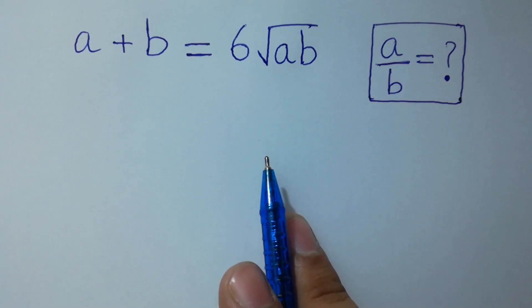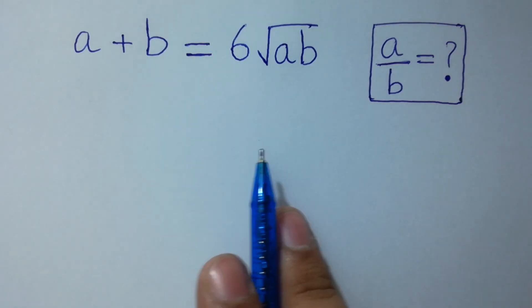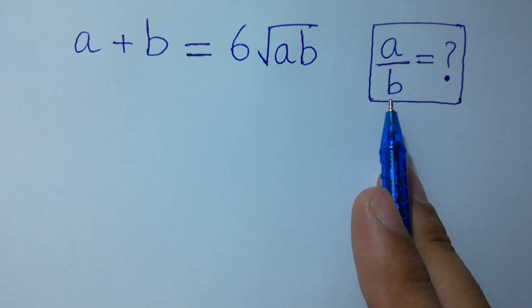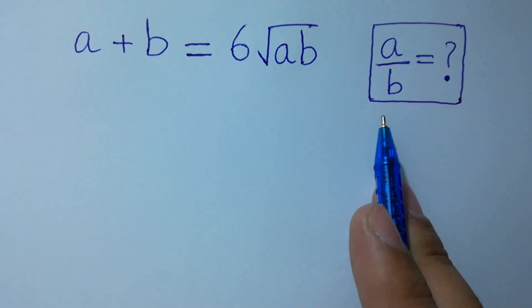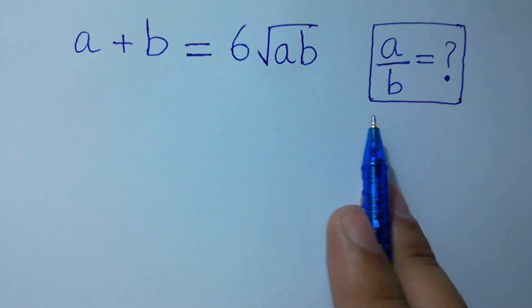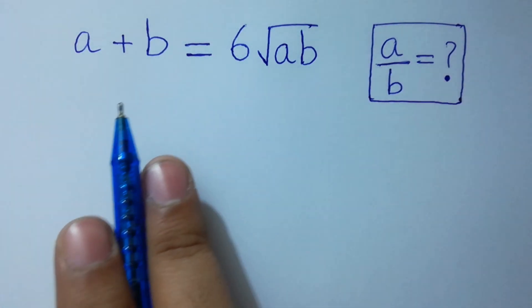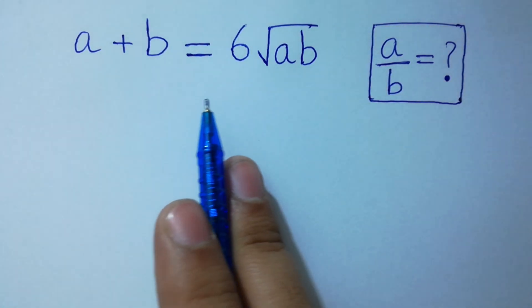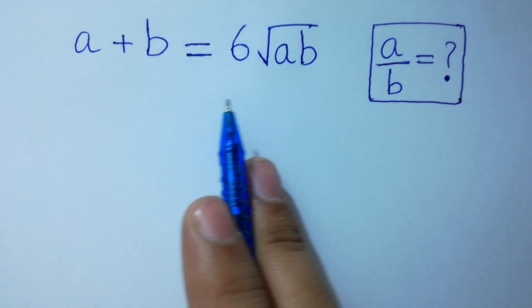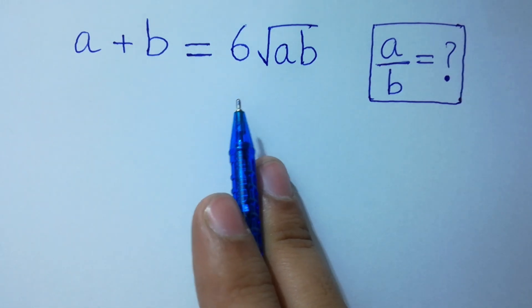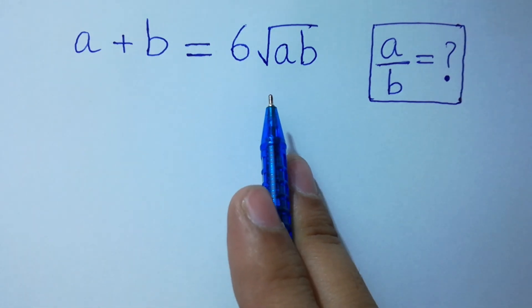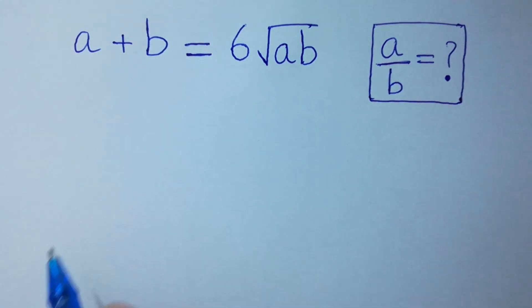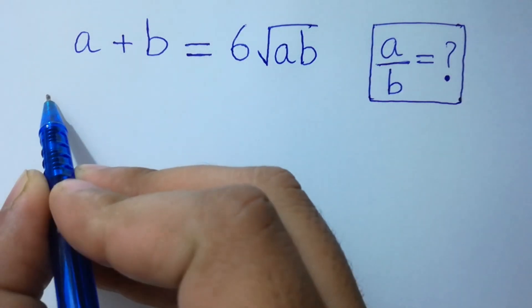Hello friends. Find the value of a over b if a plus b equals 6 times the square root of ab. Let's solve it.